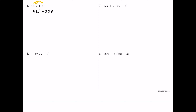For number four, we have another monomial multiplied by a binomial. Negative 3y multiplied by positive 7y: negative 3 times positive 7 is negative 21, and y times y is y squared. Then negative 3y times negative 4 gives positive 12y, so that would be the product.